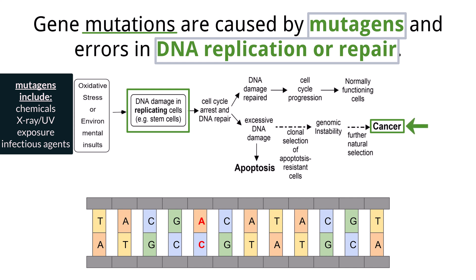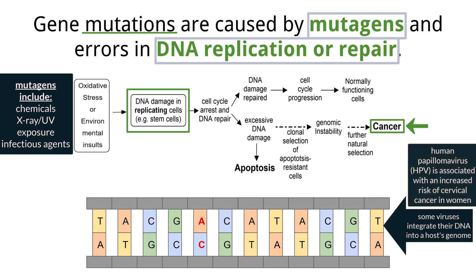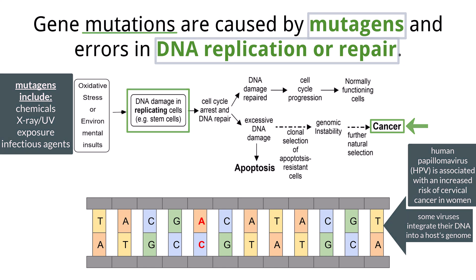Infectious agents like viruses and bacteria can also cause problems in the DNA. Some viruses can integrate their DNA into the host genome, disrupting normal gene function. Sometimes this causes problems with proteins in charge of the cell cycle, leading to cancer. For example, HPV — the human papillomavirus — is associated with an increased risk of cervical cancer in women.